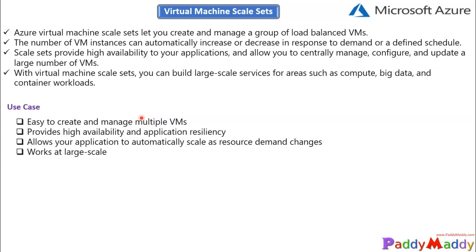You would then go ahead and create a scale set. With the scale set, all instances are created from your base image — you can either choose from the marketplace or use your own customized image. For example, you can create a complete VM with all application patches installed and convert that VM into an image. The scale set then uses that image to automatically spin up virtual machines as required, giving you consistency.